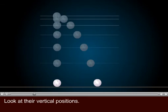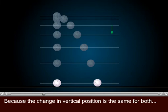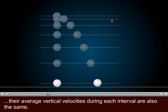Look at their vertical positions. During each flash, the heights of the two softballs are the same. Because the change in vertical position is the same for both, their average vertical velocities during each interval are also the same.